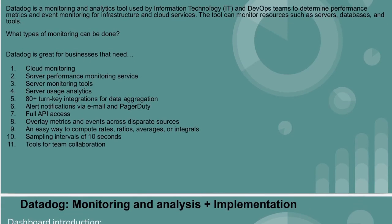With Datadog, we can monitor our cloud, servers, and server usage. It offers 80-plus key integrations, alert notifications, full API access, overlay metrics, and events across spread sources. It provides an easy way to compare rates, ratios, averages, or integrals with a sampling interval of 10 seconds, which can be adjusted as needed. For team collaboration, different teams can collaborate within a single Datadog account, and we can leverage and monitor multiple AWS accounts using Datadog.